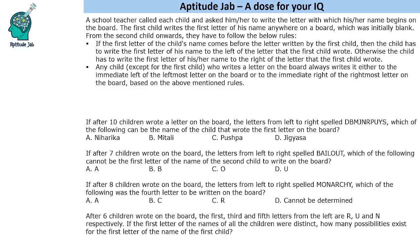A school teacher called each child and asked him or her to write the letter which his or her name begins on the board. The first child writes the first letter of his name anywhere on a board which was initially blank. From the second child onwards, if the first letter of the child's name comes before the letter written by the first child, the child has to write on the left; otherwise, the child writes to the right.